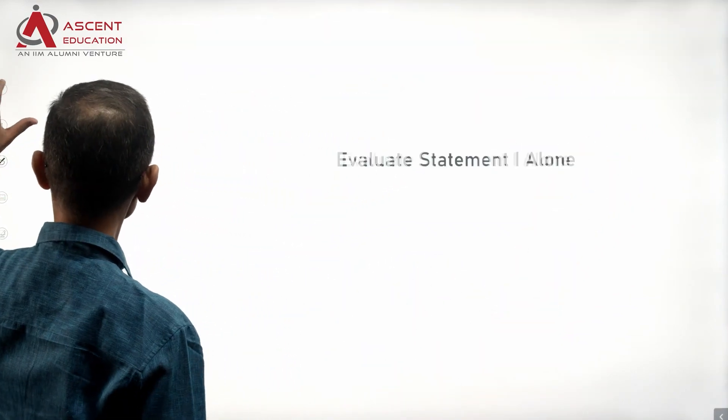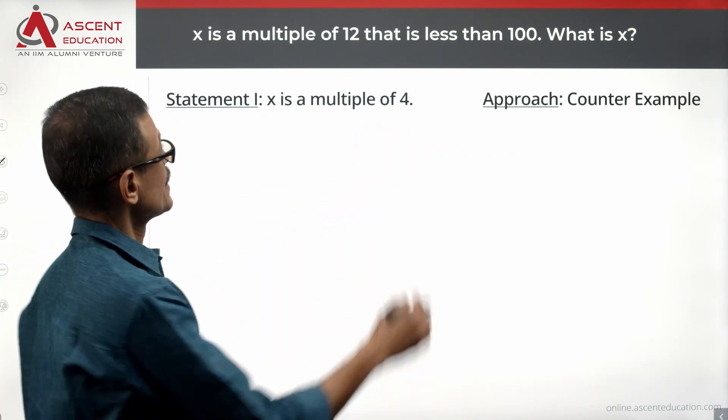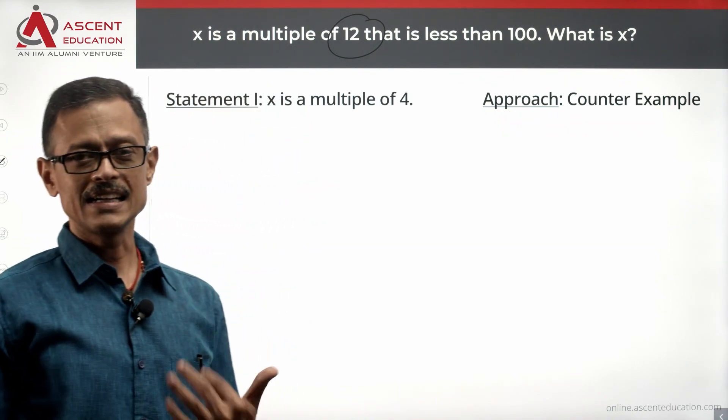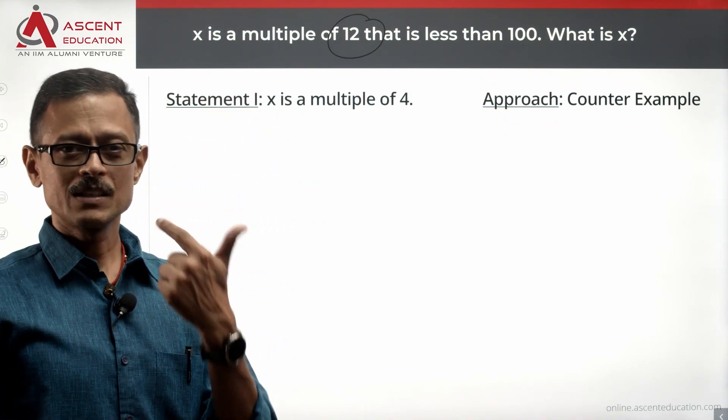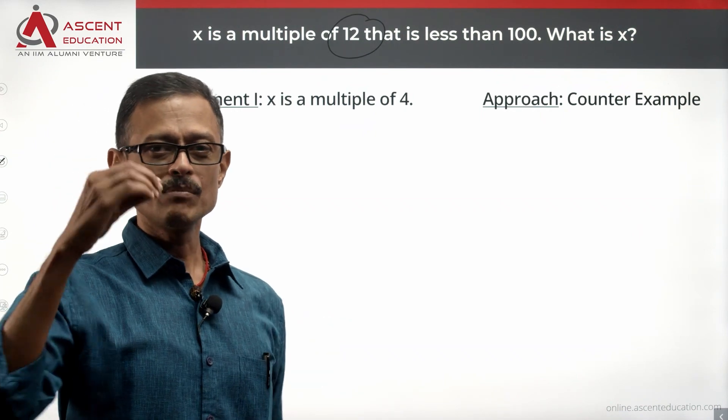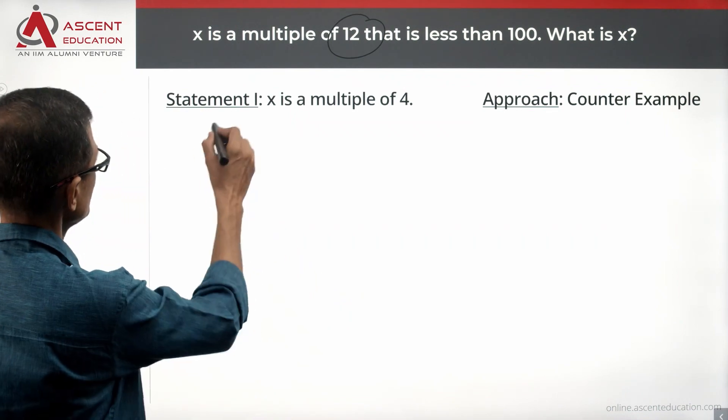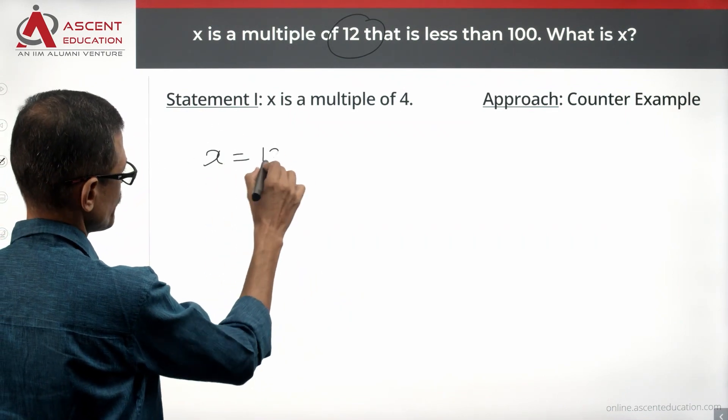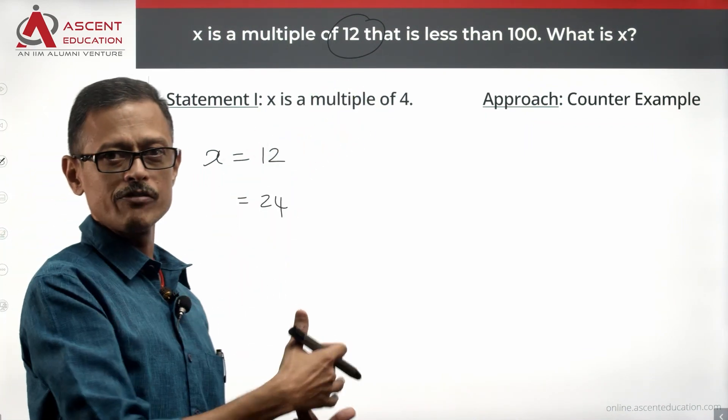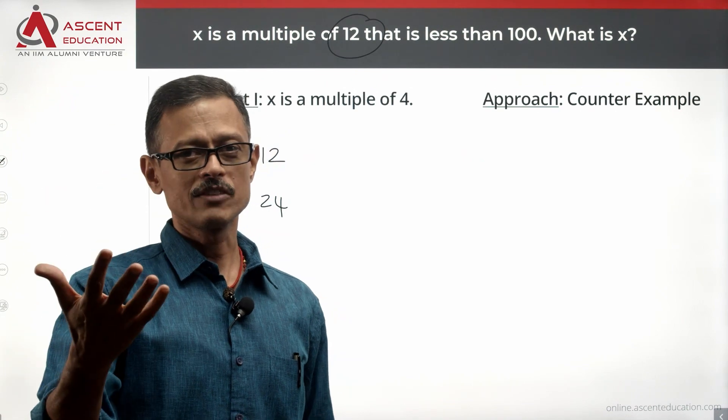Take a look at statement 1 alone: X is a multiple of 4. X is already a multiple of 12, which is less than 100. If X is a multiple of 12, X will definitely be a multiple of 4. For example, X equals 12—is it a multiple of 4? Yes. X equals 24—is it a multiple of 4? Yes. Because any multiple of 12 is a multiple of 4 and a multiple of 3.